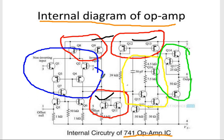This is your level shifter stage, and this is your output stage. This is also one current mirror to drive the transistor. This is the offset null — to make the difference at the output zero, we apply offset null voltages here.